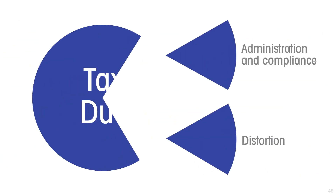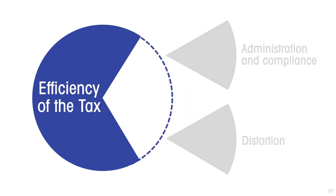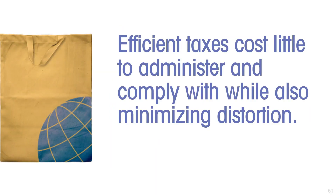So if we want to assess how efficient a tax is, we need to take account of the cost of administration and compliance, and also take account of the distortion to the economy. When we do that, what is left represents the efficiency of the tax. The most efficient taxes are the ones that cost little to administer and comply with, and also minimize distortion to the economy.